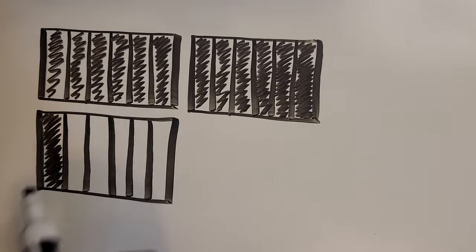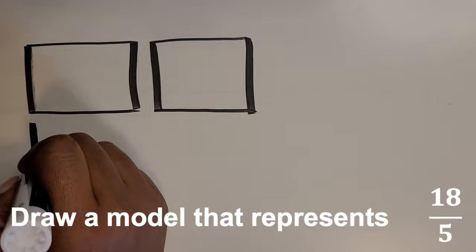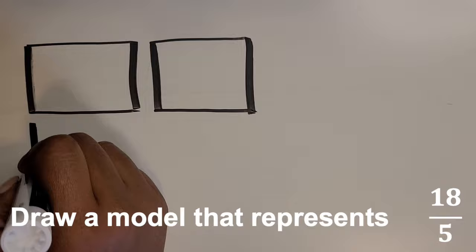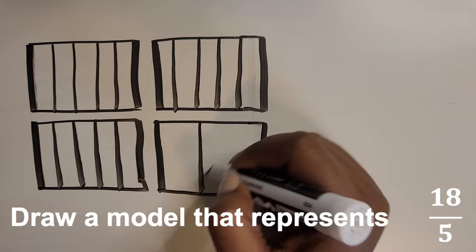There are five-fifths in one whole, so we know we need at least three wholes to make fifteen. To get to eighteen, draw an extra whole. Partition each whole into fifths, then shade in the total amount you need — starting with all five-fifths from the first whole.